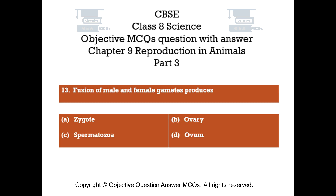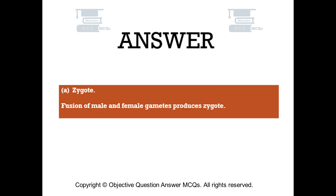Question number 13. Fusion of male and female gametes produces. Option A: Zygote. Option B: Ovary. Option C: Spermatozoa. Option D: Ovum. The right answer is option A — Zygote. Fusion of male and female gametes produces a zygote.